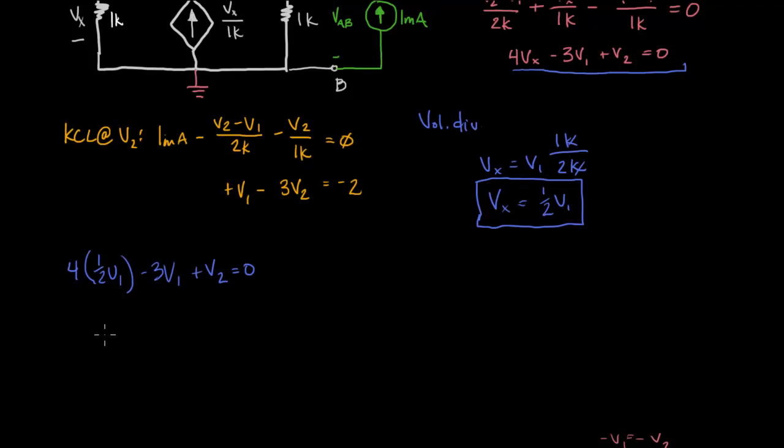So then we get two V1 minus three V1. So, we get minus V1 is equal to minus V2. And so, you can see then that V1 is equal to V2.